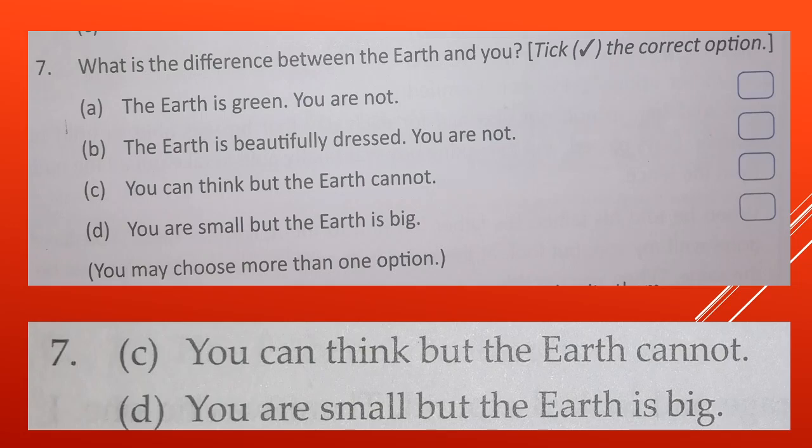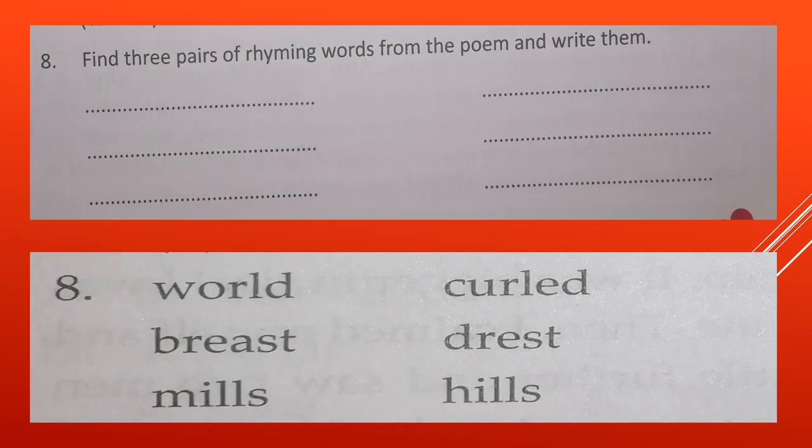Now next question is here. You have to find three pairs of rhyming words from the poem and write them. You have to find the rhyming words from the poem. You have to write three words and their rhyming pairs. So world and curled, showing the rhyming words. The last pair of alphabets, as you can see, are the same here. World and curled. Breast and dressed. Mills and hills. So these are the rhyming words.